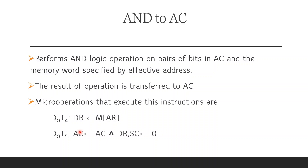In the basic computer, at D0 T4, the memory content at address register (AR) is loaded into the data register (DR): M[AR] → DR. Then at D0 T5, the accumulator is ANDed with DR and the result is stored in AC: AC ← AC AND DR. Finally, the sequence counter is cleared (SC ← 0).